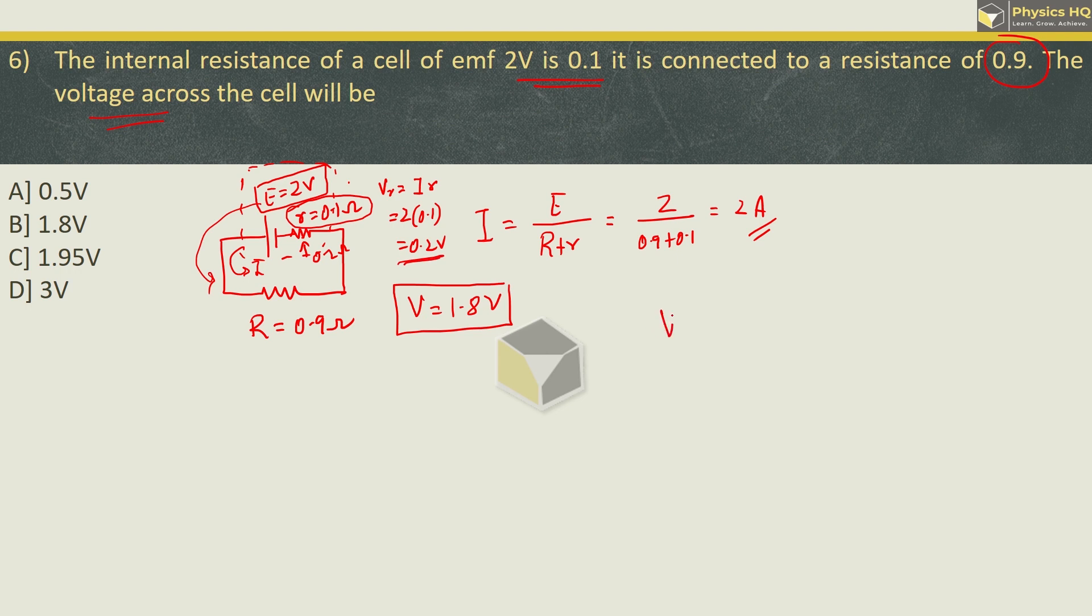This simple formula is V equals E minus i into r. EMF is 2, current is 2, and internal resistance is 0.1. So this is the voltage across the cell. The correct option is option B. I hope you understood the difference between EMF and voltage across the cell.